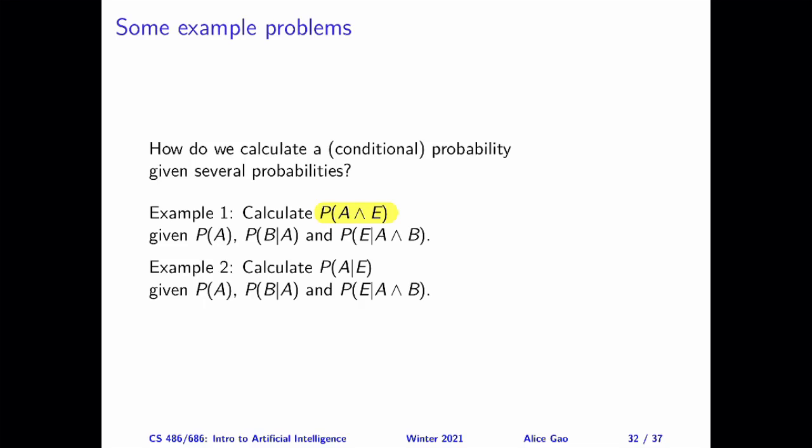In the second category, we want to calculate the probability of A given E. Again, this probability may involve all the variables, or it may only involve some of the variables.